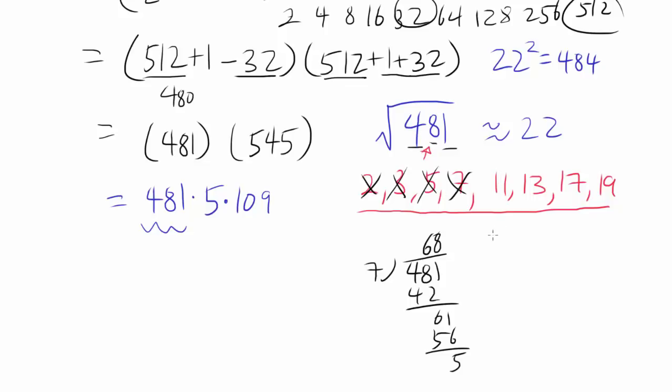How about 11? Well, one way to check divisibility by 11 is to subtract 4 minus 8, then add 1 to it. You want to go back and forth with the sign, starting with minus. And you do not get a multiple of 11. You get negative 3, which is not a multiple of 11. So 11 is out.